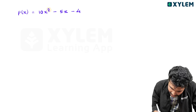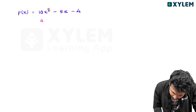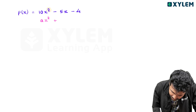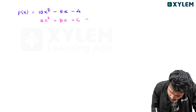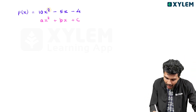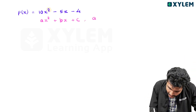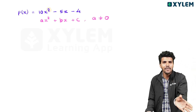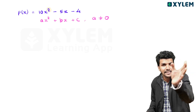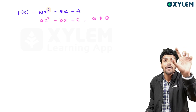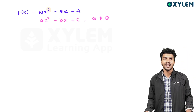This is a general form: x squared plus Bx plus C equals zero, where A is not equal to zero. This is a second degree polynomial.